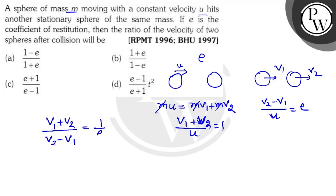Now using the componendo-dividendo law, that will be 2v2 upon 2v1, that is equal to 1 plus e upon 1 minus e. So v1 upon v2 is equal to 1 minus e upon 1 plus e.